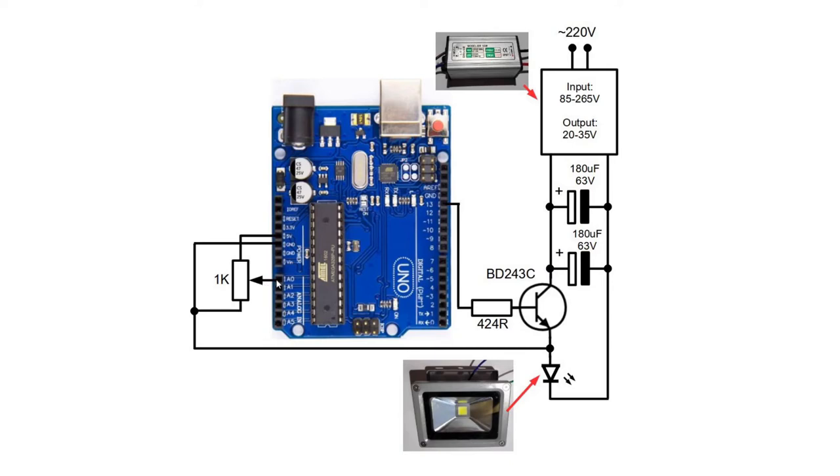Based on the voltage level that we have on analog input 0 that is adjusted using the potentiometer, the switching speed of pin 13 is changed accordingly. Therefore also the switching speed of the LED lamp is changed.